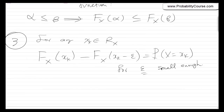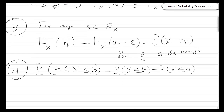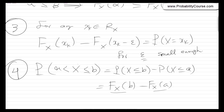Finally, a useful formula: the probability that x is larger than a and less than or equal to b can be written as the probability that x is less than or equal to b minus the probability that x is less than or equal to a, which equals Fx of b minus Fx of a. Note that for discrete random variables, we must be careful about where we use strict inequality versus less than or equal to, as that can make a difference. Thank you.